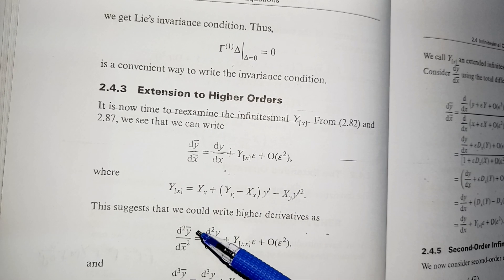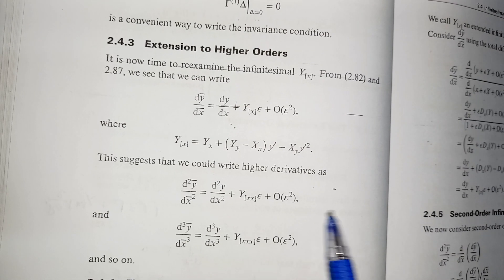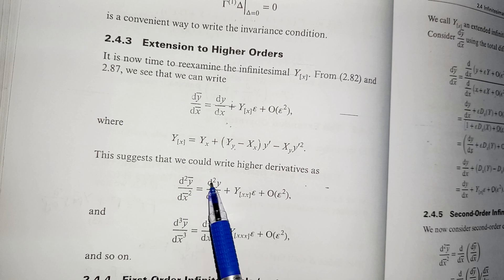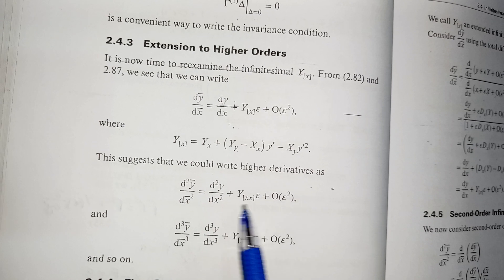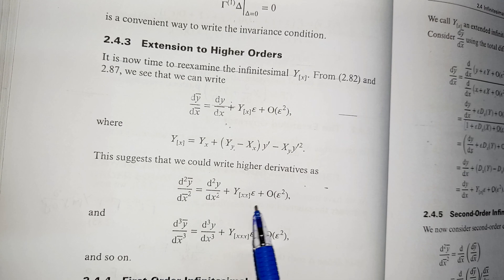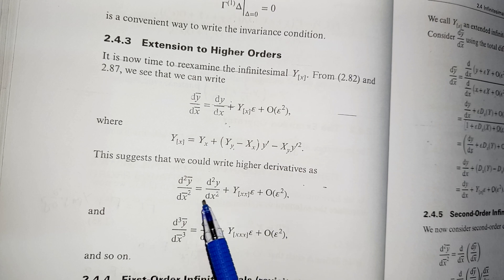Now if we want to extend this idea to higher order derivatives then definitely we have to write it as d2y bar by dx bar 2 that is equal to d2y by dx 2 plus yxx because now we are taking the second derivative plus order of epsilon square as it is and similarly if we want to find the third derivative.